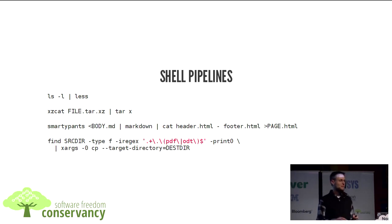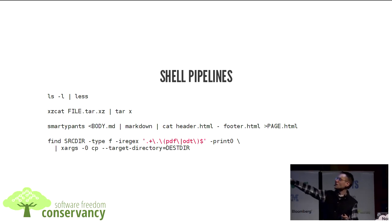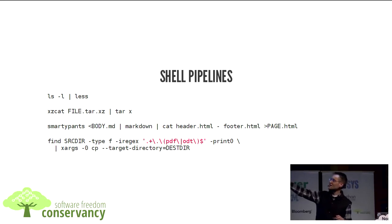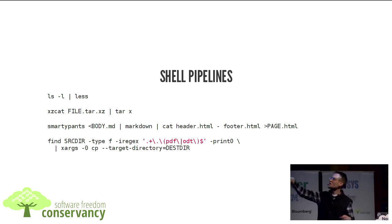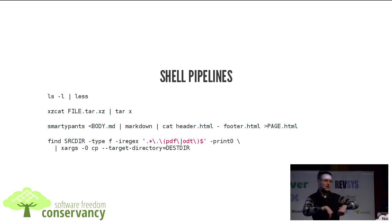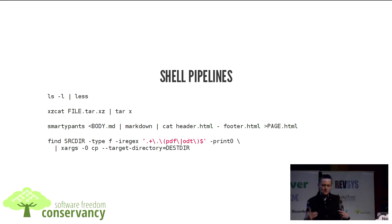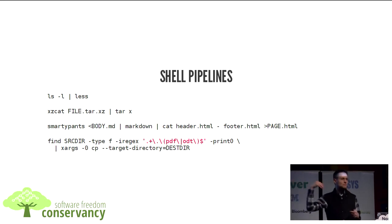Here's an example of a kind of pipeline I've written in the past. What it's saying is: go through a source directory recursively, find all files with extension PDF or ODT — basically documents — print out a list of them, then turn that list into arguments for cp, the copy command, and copy them recursively into a destination directory. This recursively searches a source directory, finds all documents, and copies them into a single target directory for reorganization or backup. That's a very high-level concept expressed in just a single shell pipeline — this is a lot of power.